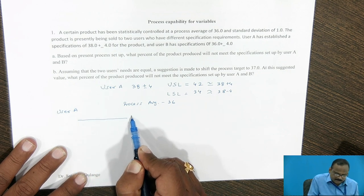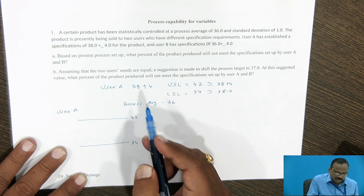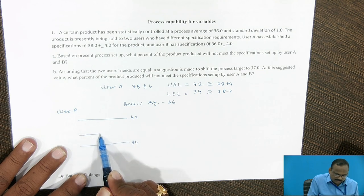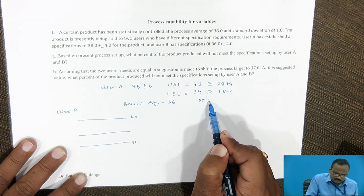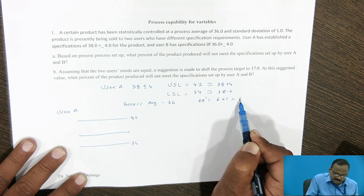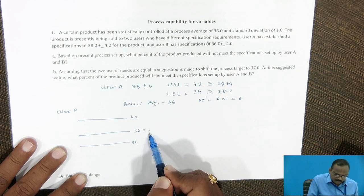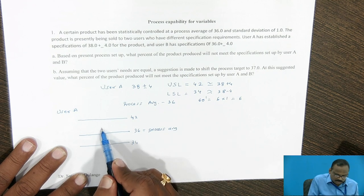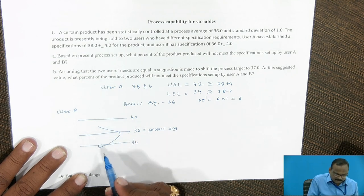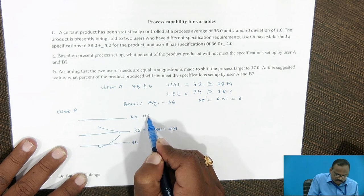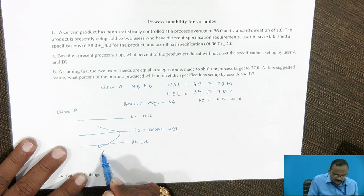With a standard deviation of 1, Six Sigma Dash equals 6 × 1 = 6. Looking at the diagram, the upper specification limit is 42 and the lower specification limit is 34. Some portion of the distribution falls below the lower specification limit — that portion below LSL is called SCRAP.